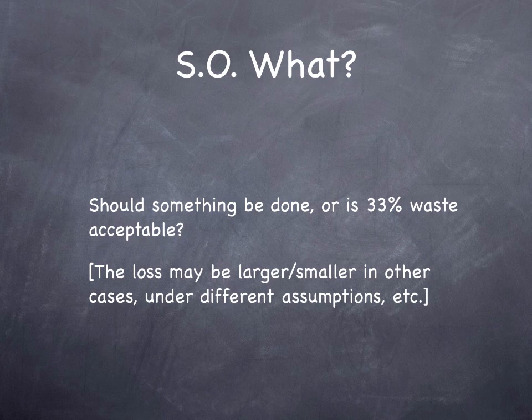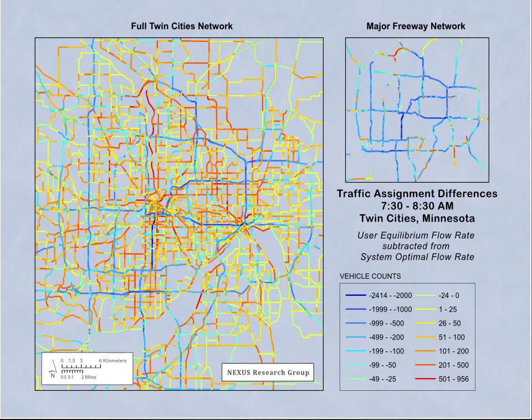Is 33% an acceptable number? Of course, we live in a much more complicated world than the two-link network. As a research project a couple of years ago, we tested this for the Twin Cities region and looked at the differences in traffic assignment with user equilibrium versus system optimal assignment. Everything else was the same — we just changed the logic under which people were choosing routes, using the derivative of the link performance function to get the marginal cost. The system optimal assignment has lower flow rates, shown in blue, on freeways and higher flow rates, in red, on arterials. Under user equilibrium, people overuse the freeways and underuse the arterials.